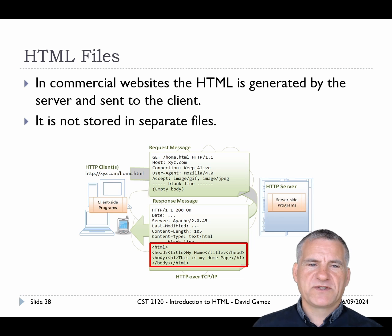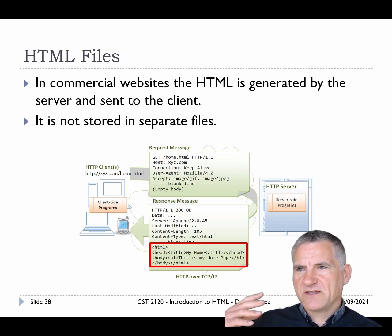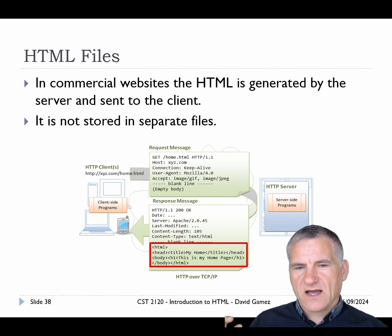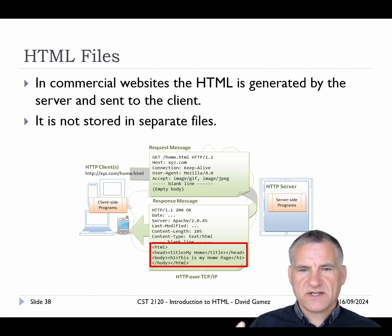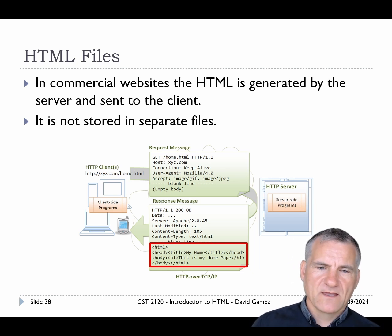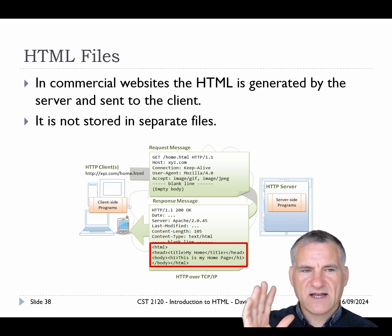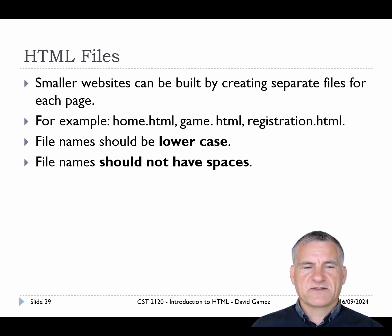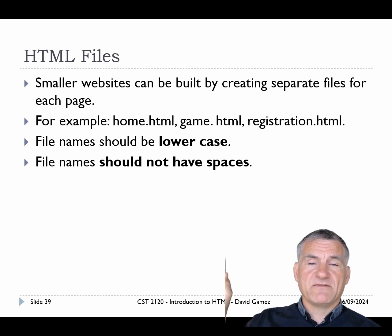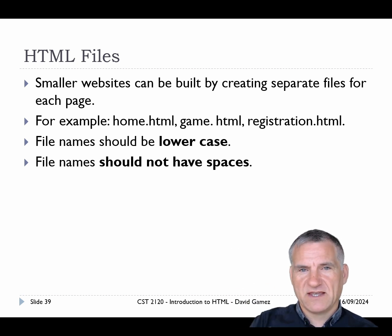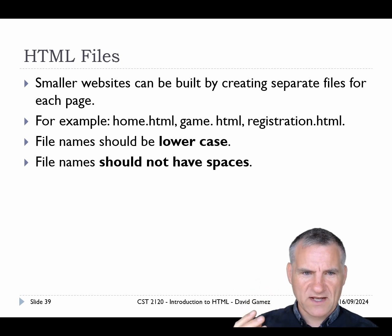For commercial websites, the HTML is generated by the server and sent to the client. The Google homepage, for example, is generated by a massive server farm — it's not a static file. Once you get to a certain scale, you use code to stitch together the HTML and send it back in response to an HTTP request. For smaller websites, you can build separate files for each page and develop with HTML files initially.